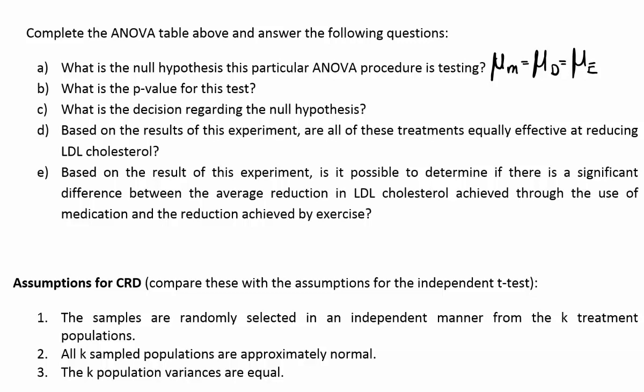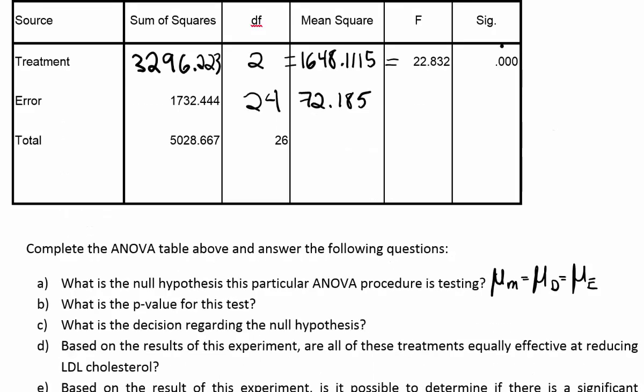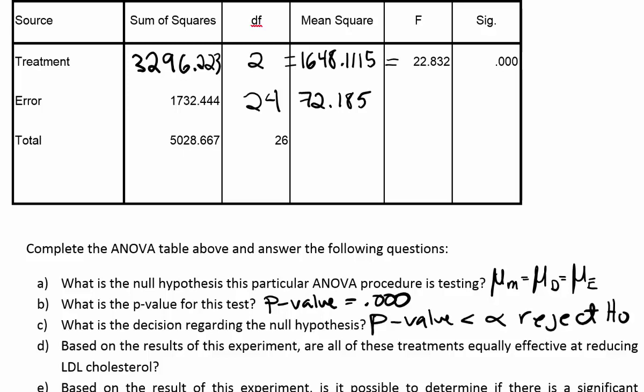Part B asks for the p-value. In the SPSS output, the p-value is given in the column labeled 'Sig' for significance level. The significance level is given as 0.000 — very small. For part C, since the p-value is less than alpha, we reject the null hypothesis.